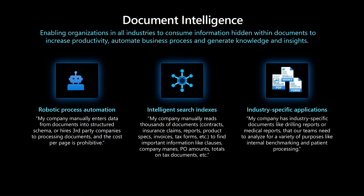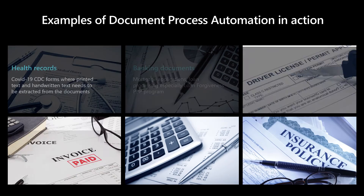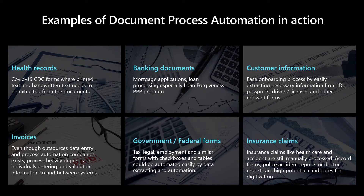The third one is industry-specific applications, where a company has industry-specific documents like drilling reports or medical reports that the team needs to analyze for a variety of purposes like internal benchmarking and patient processing. Here are some examples of document process automation in real life: health records, banking documents including mortgage applications and loan processing, customer information including ID, passport, and driver licenses, invoices, government forms for tax, legal, and employment, and insurance claims like healthcare and accident. You can even train your own custom model if none of the pre-built ones satisfy your needs.